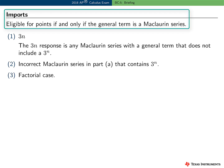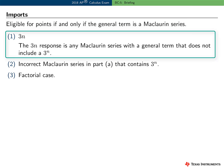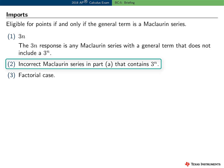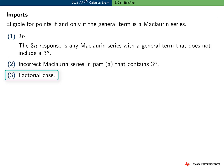Just one more note about this question: it was possible for a student to earn points even if they made an error in Part A, as long as their general term was still a Maclaurin series. There were three common cases. The 3N case involved a Maclaurin series with a general term that did not include 3 to the N but rather 3 times N. The second case involved an incorrect Maclaurin series in Part A, even with a 3 to the N term. And some students had an N factorial in their Maclaurin series.